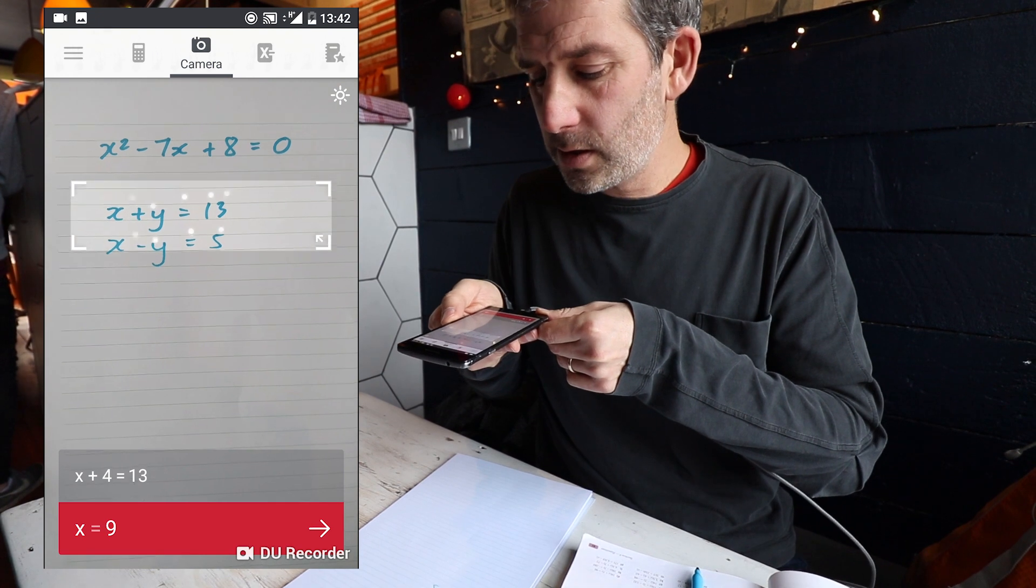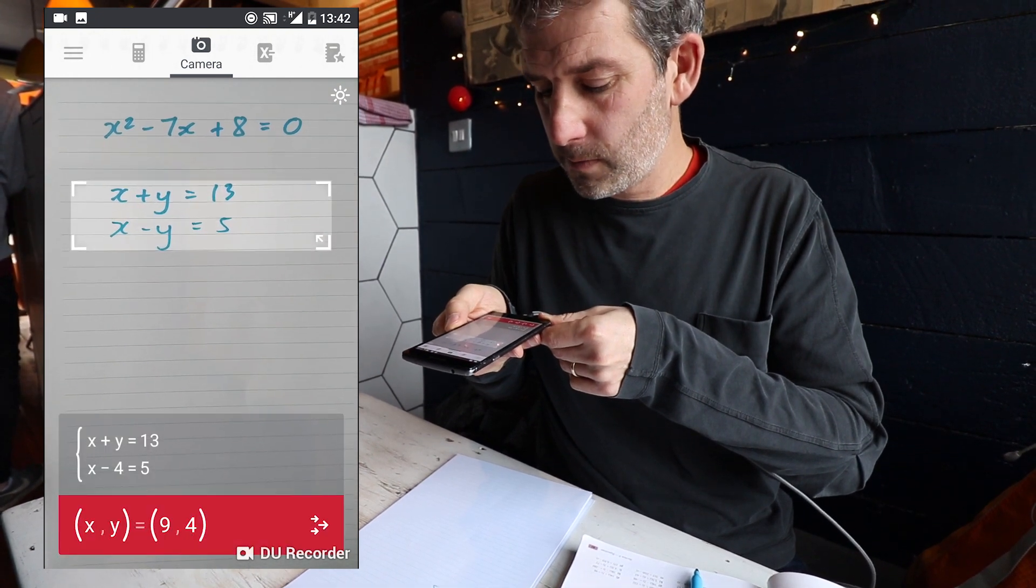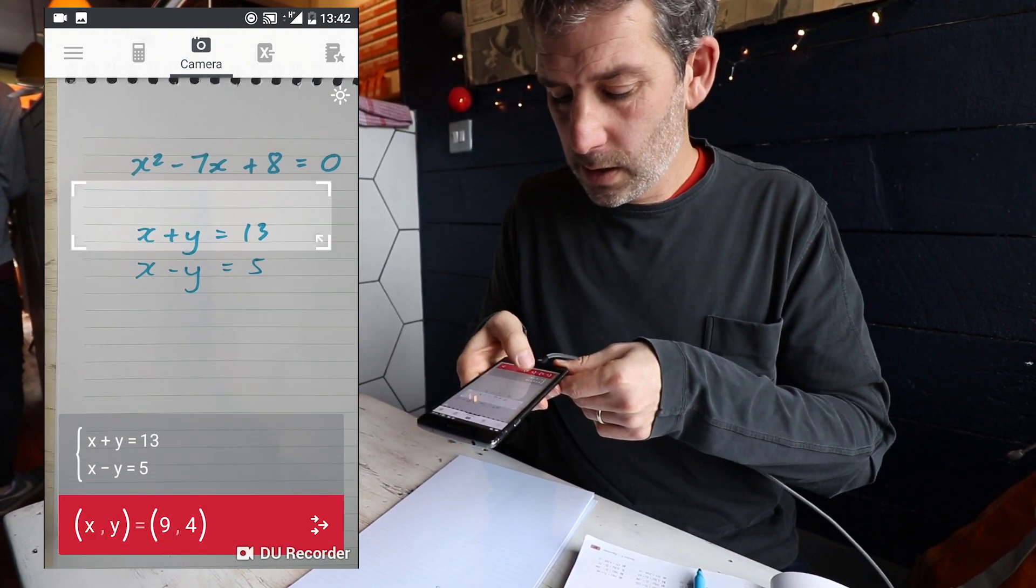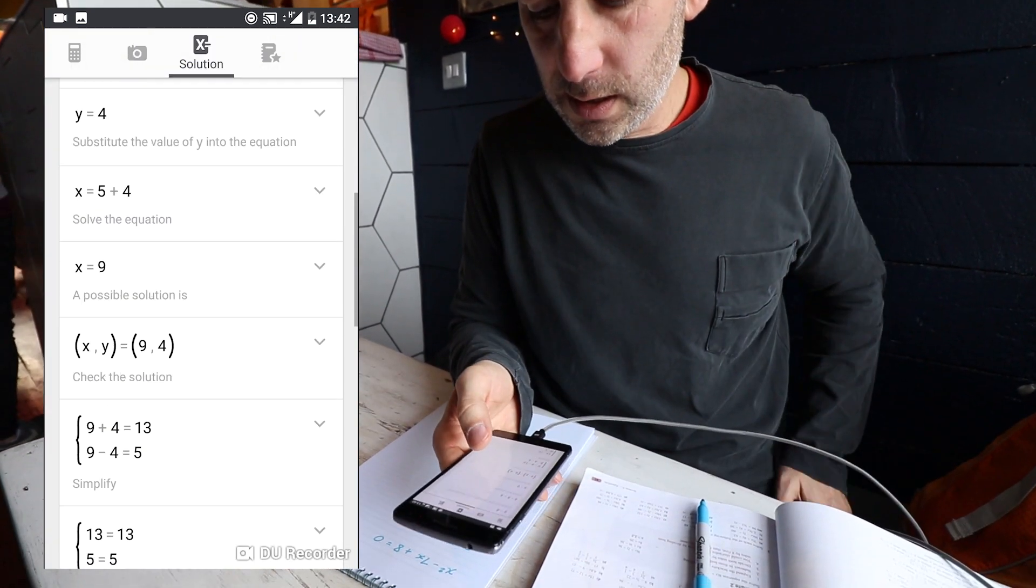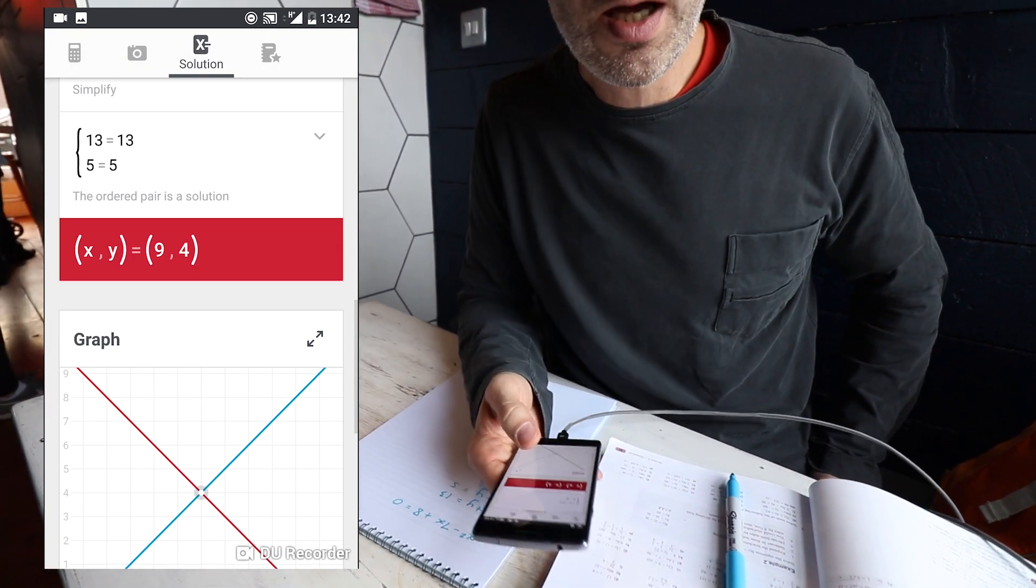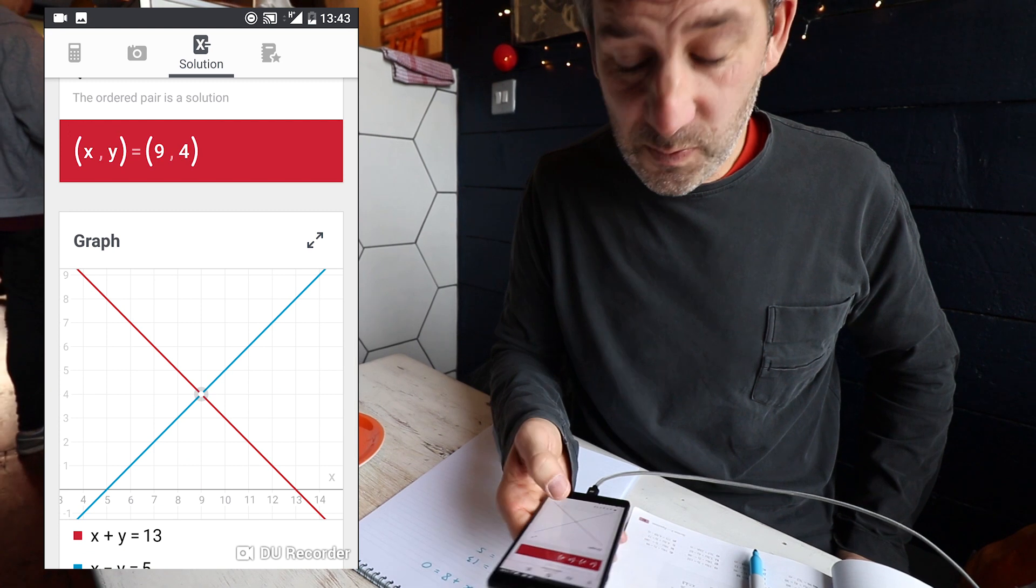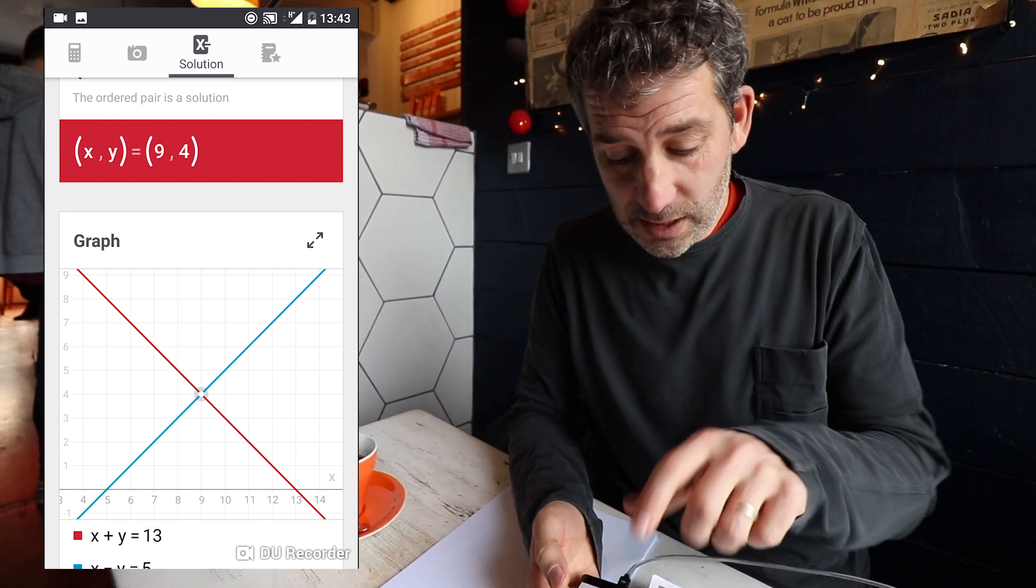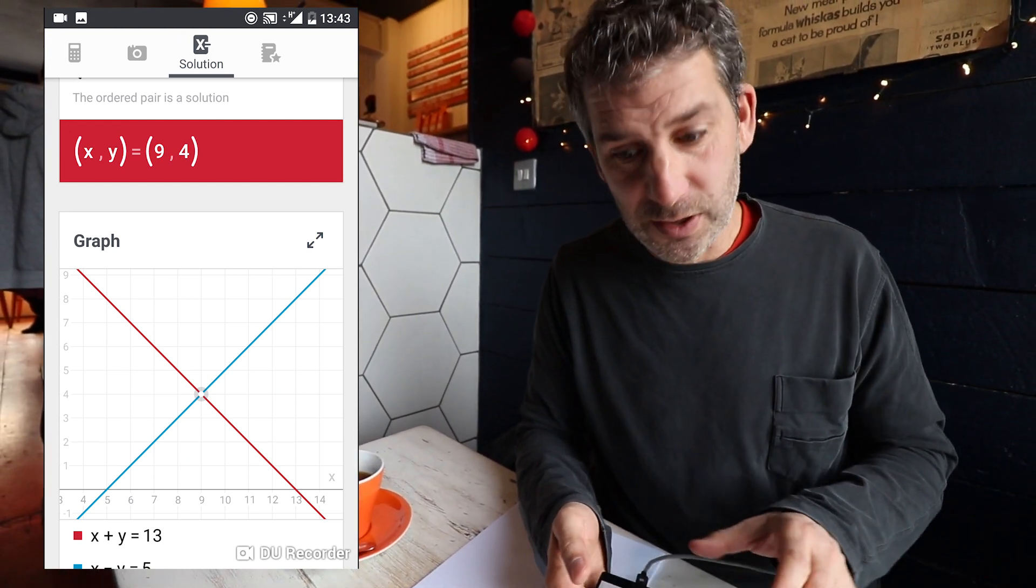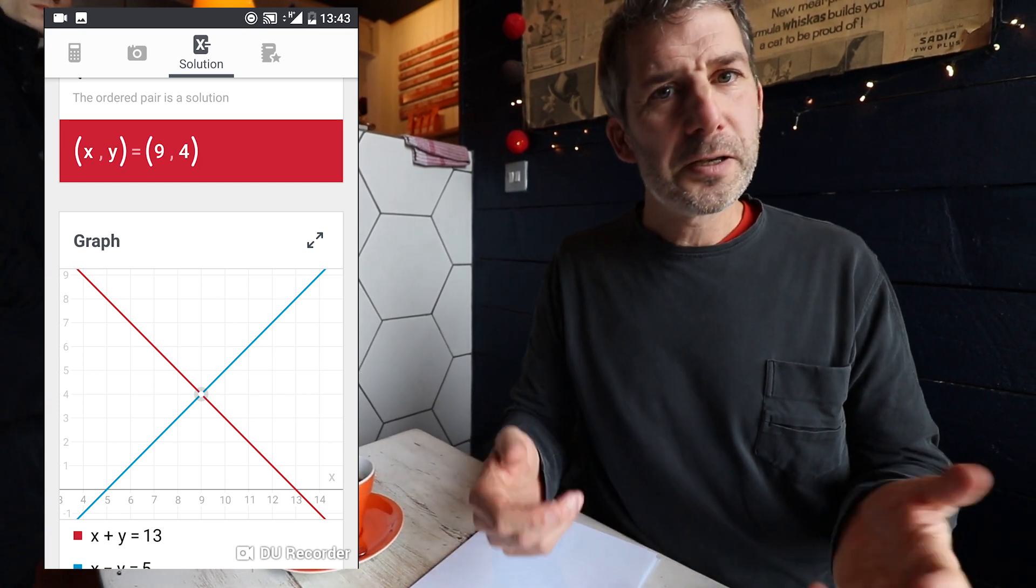There we go. So I've got two equations. I need to get my camera out a bit further for that one. He's got it. So we've got our solution there, that x is 9 and y is equal to 4. And again, it's plotted both of those graphs, and you can see that point where they intersect, that's a solution to the equation. Isn't that clever?